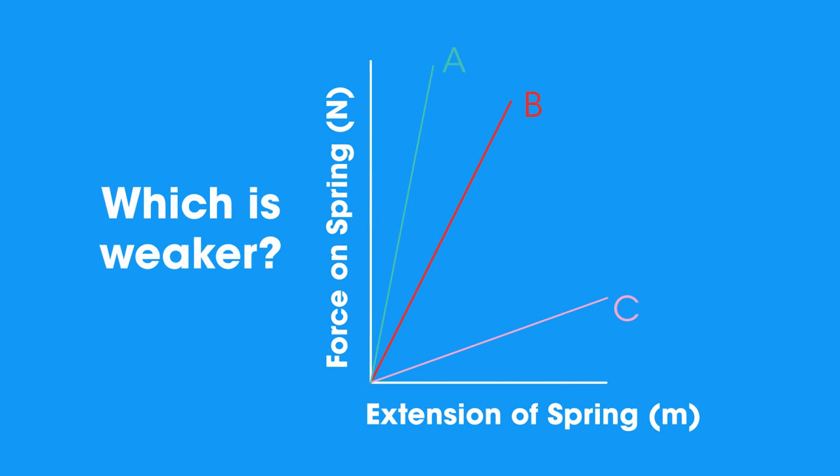Which is the weakest spring? A, B, or C? Pause the video while you think. Well, C is the weakest spring, needing only a small force to make a big extension.